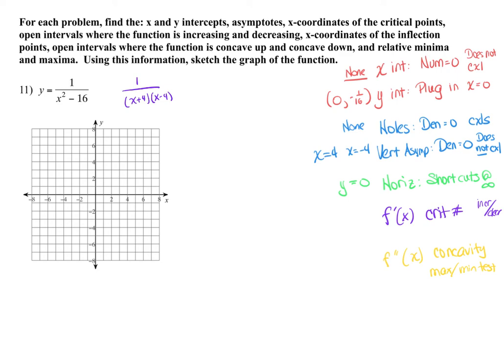And now I'm going to look at finding my first derivative. So I would rewrite this as (X² - 16)^(-1). That means I'm going to have -1(X² - 16)^(-2) times 2X. So my first derivative is going to be -2X over (X² - 16)².